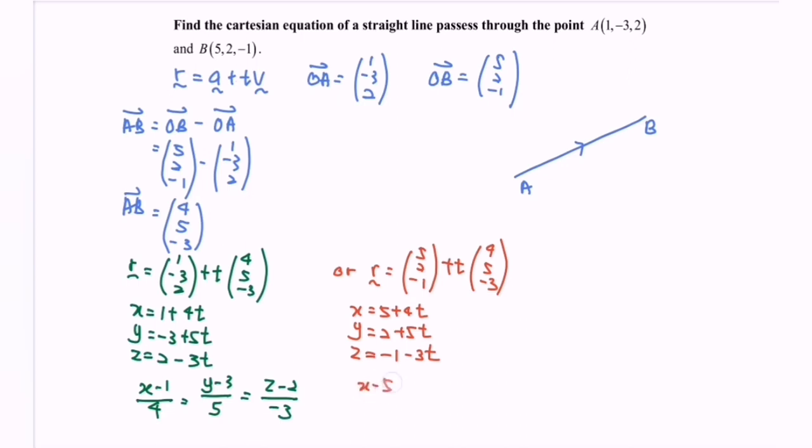Finally, X minus 5 over 4 equals to Y minus 2 over 5 equals to Z plus 1 over negative 3. So we have two answers. The green color and the red color are acceptable, because of the difference in the point A and B.